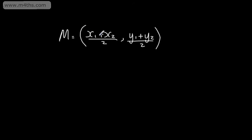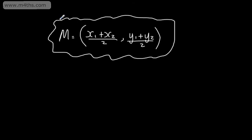All this is telling me to do is add the x-coordinates together and divide by 2 and add the y-coordinates together and divide by 2. Or, if you like, it's the average of the x's and the average of the y's.